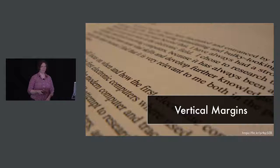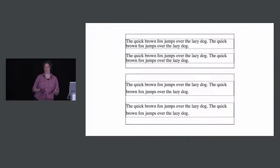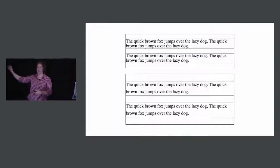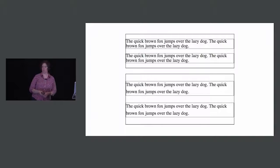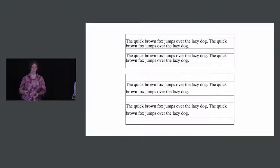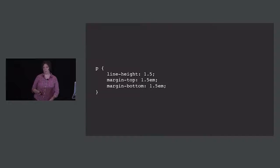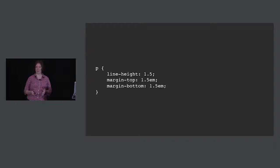Vertical margins are also important — that's the space above and below a paragraph. With a line height of 1, the vertical margin between paragraphs should be 1 line; with a line height of 1.5, the vertical margin should be 1.5 lines. By matching those numbers, you get an appropriate margin between paragraphs to go along with your line height. In CSS, you use the same number, but for the margins you add ems as the unit. For line height you use no unit, but for top and bottom margins you use ems.